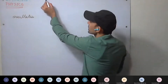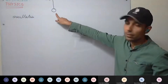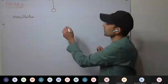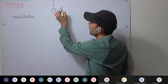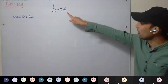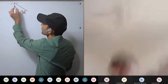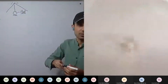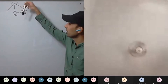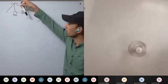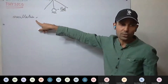What do you mean by oscillation? If this is our rigid support, a string is suspended and then we have a heavy metallic sphere made of iron or brass — this is called the bob. Oscillations means one complete to and fro motion. One complete to and fro motion is called one oscillation.